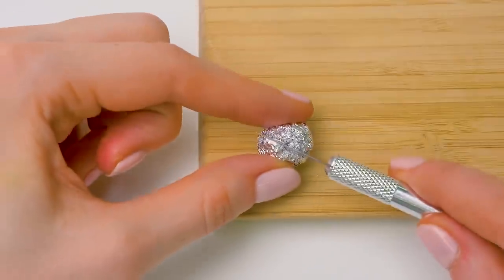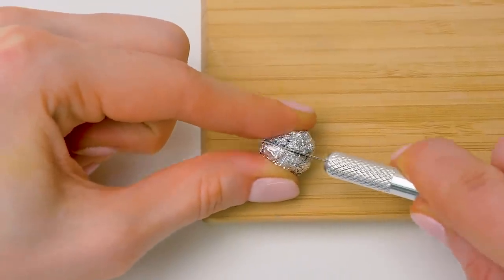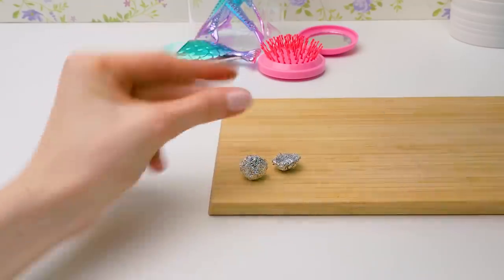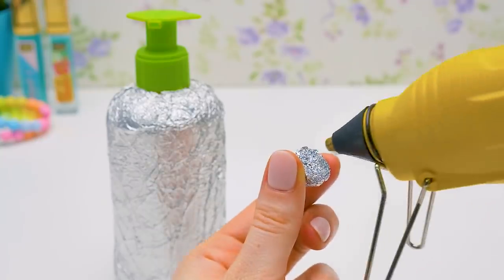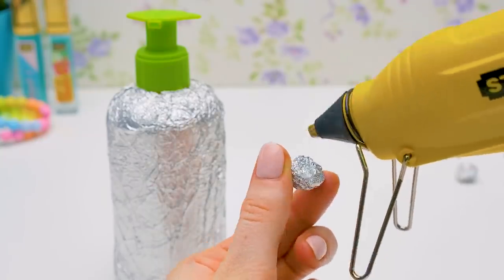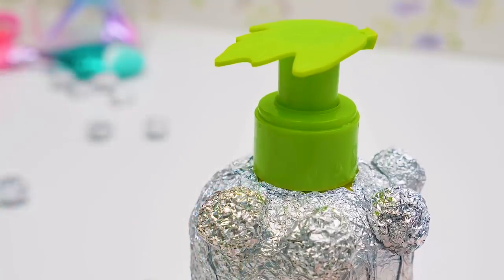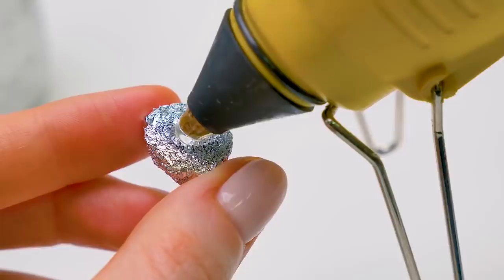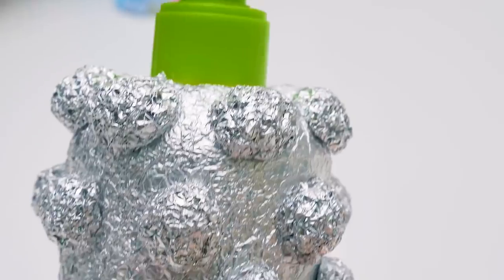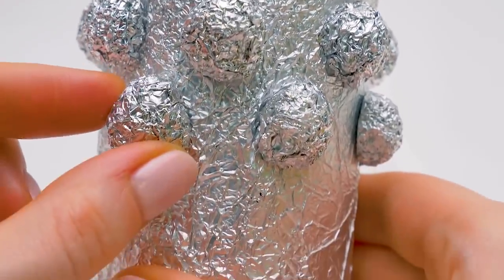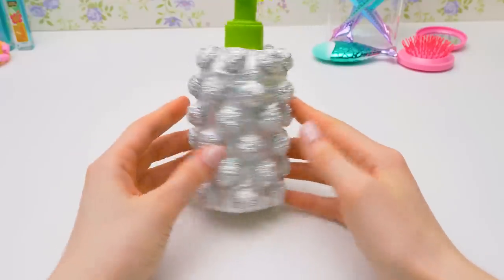Now let's take some more foil and make a small ball out of it. And then cut it in half. Oh, that was easy! We're going to need more! Yay! Let's take our foil half balls, apply some glue on them, and stick them to the bottle. One by one. They should be glued in a staggered order. And we need to repeat the process several times until the whole bottle is covered. Just what we need!